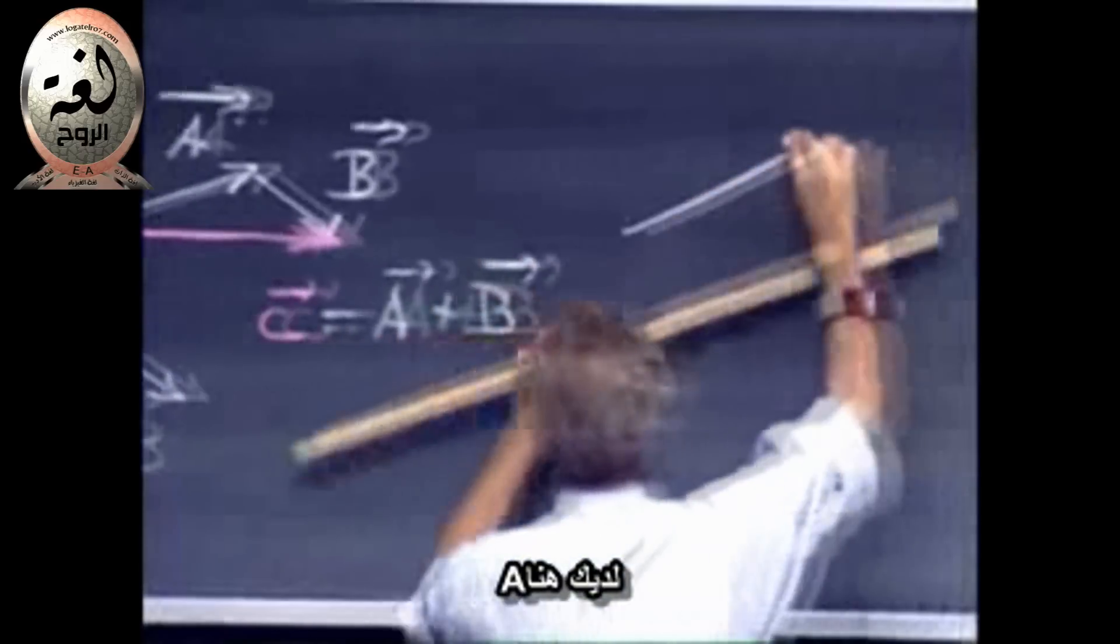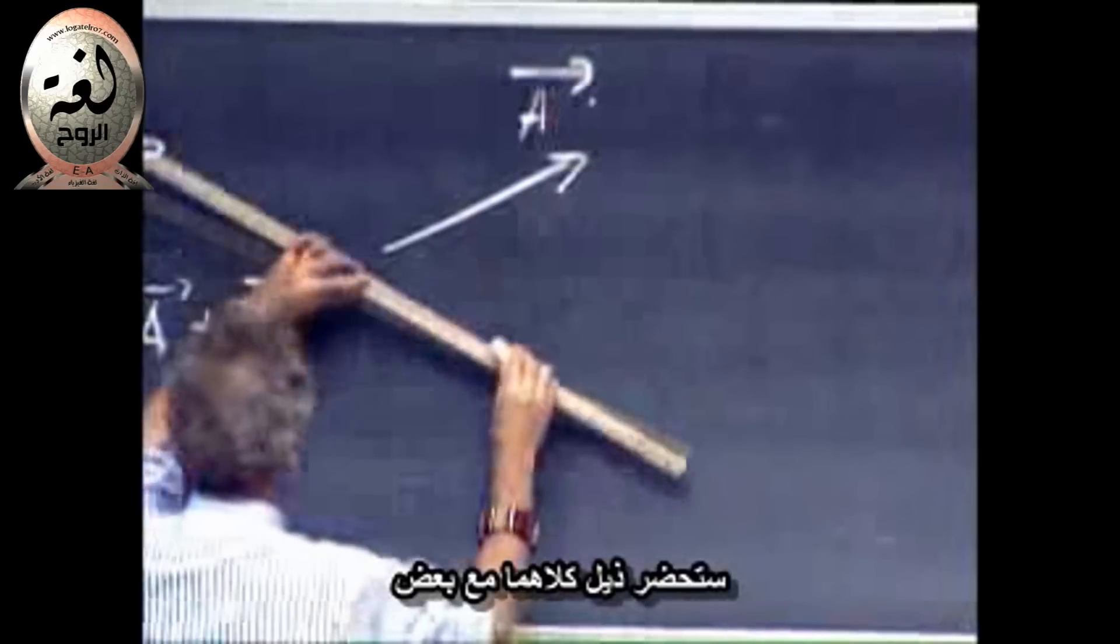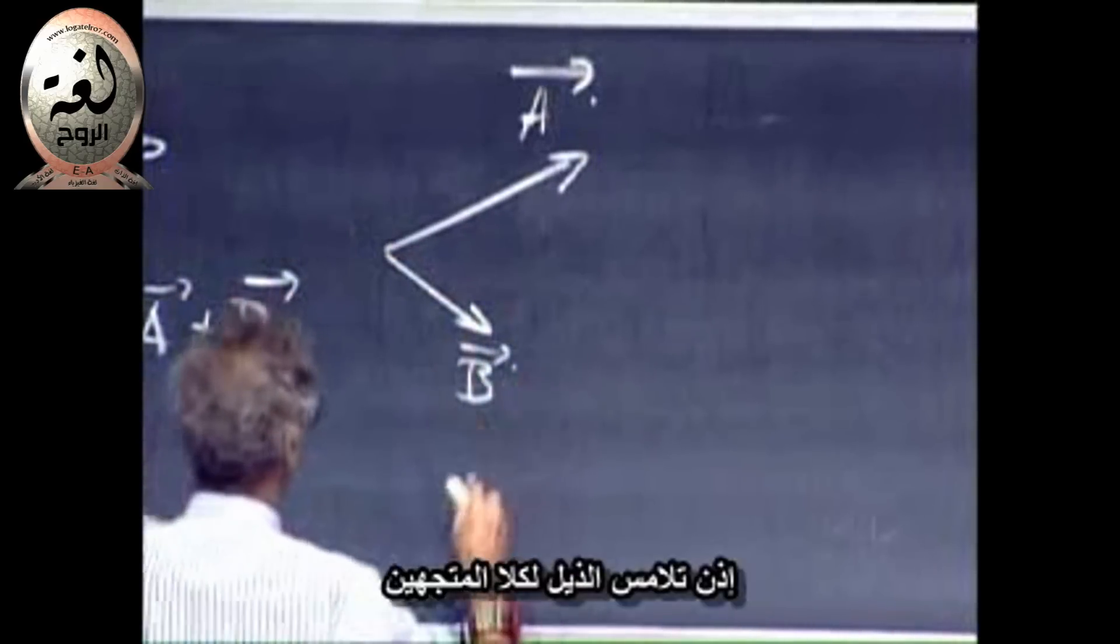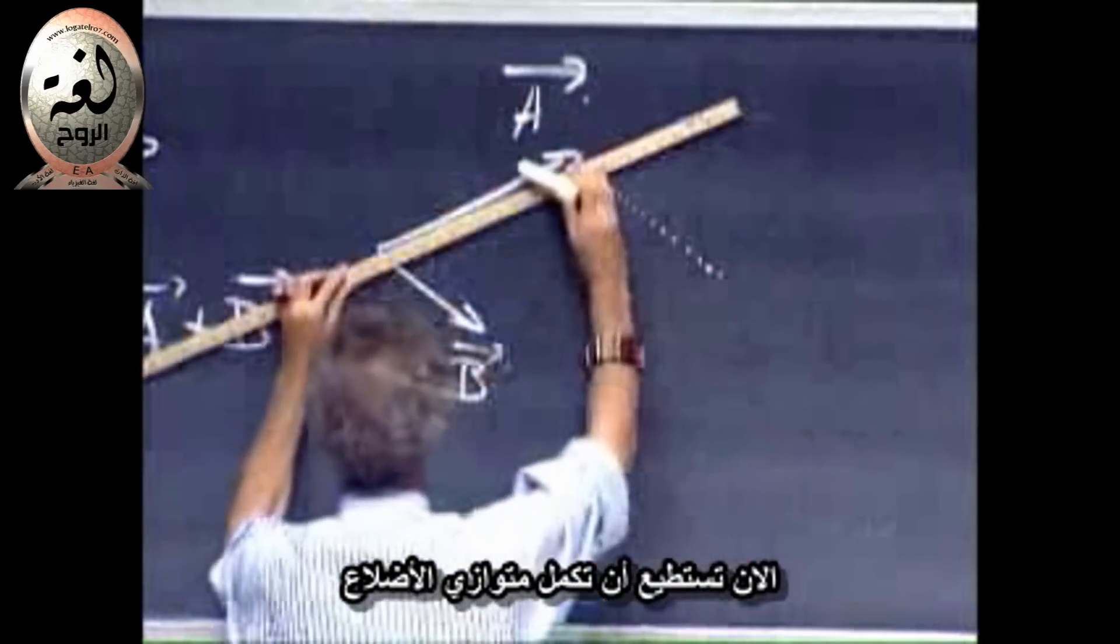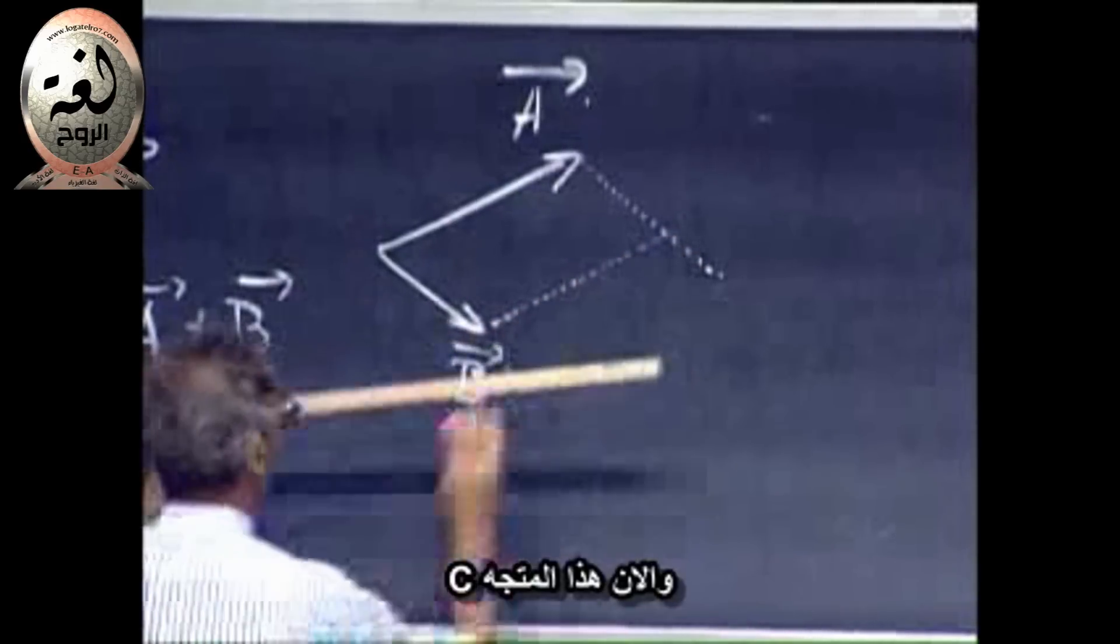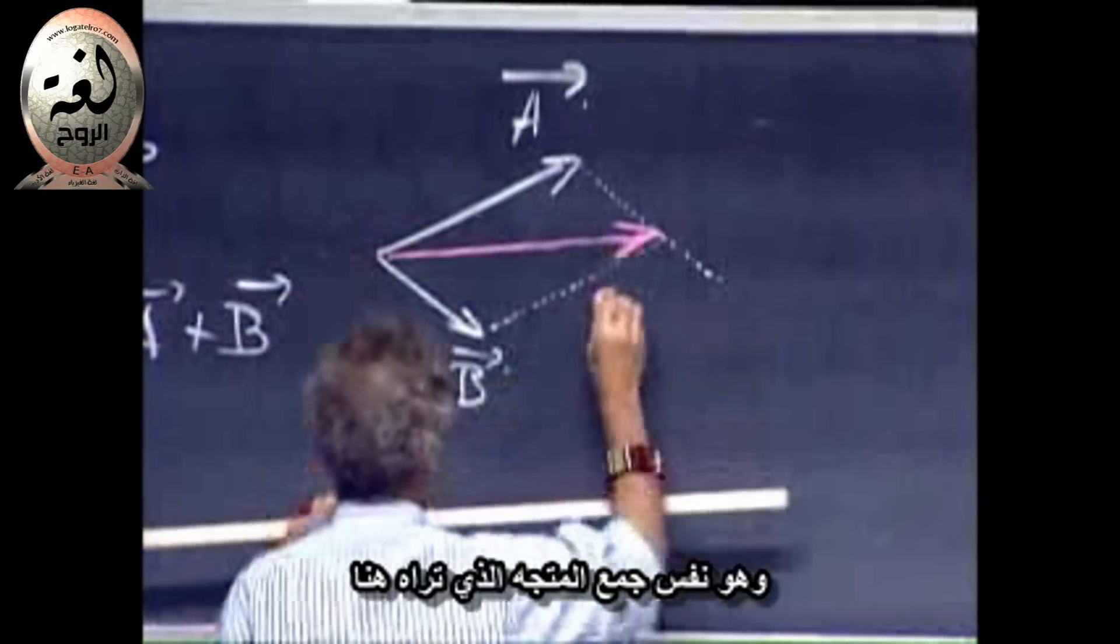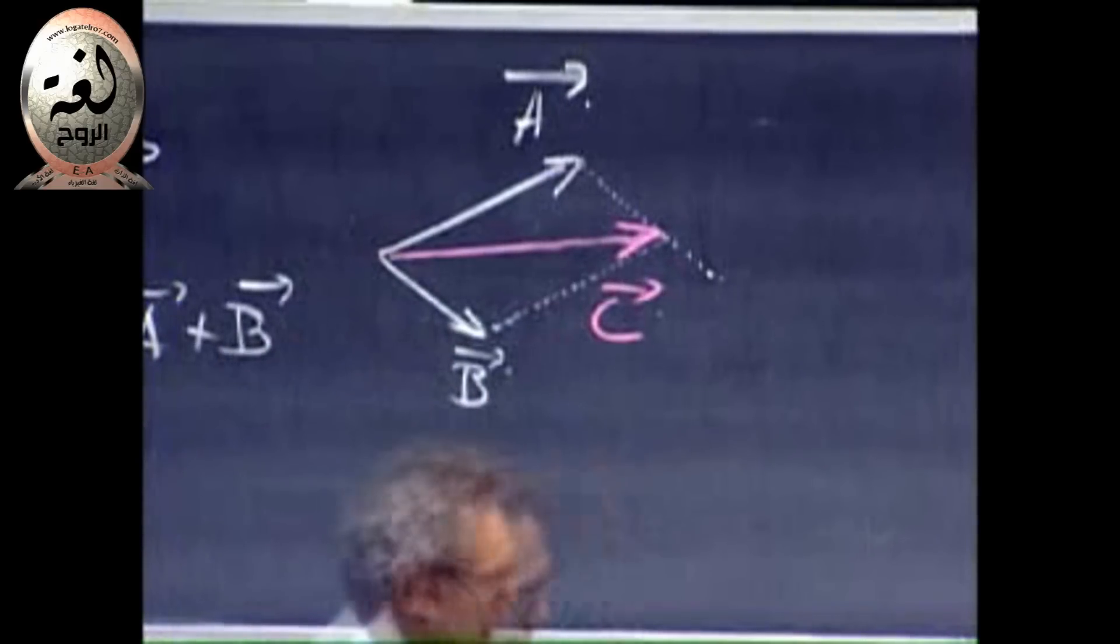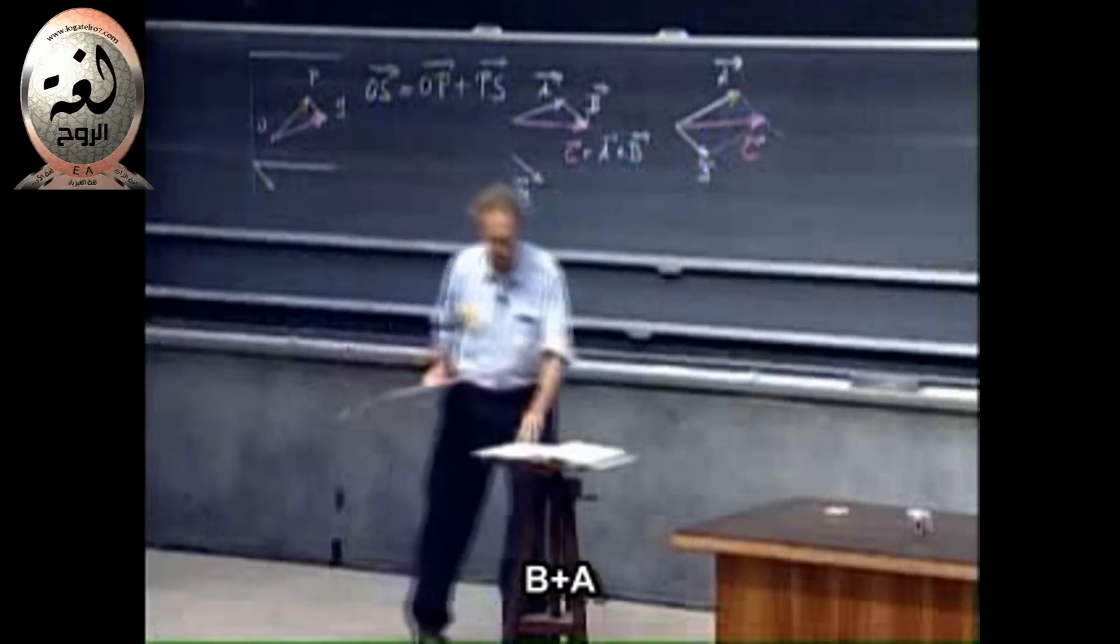Here you have A. You bring the two tails together. So here is B now. The tails are touching. And now you complete this parallelogram. And now this vector C is the same sum vector that you have here, whichever way you prefer. You see immediately that A plus B is the same as B plus A.